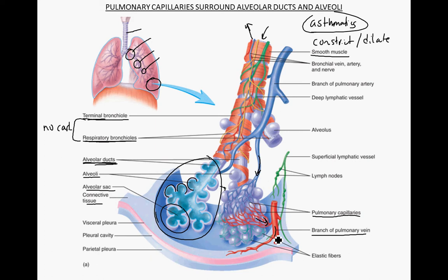Other structures associated with this include the bronchial vein, artery, and nerve externally. These bronchial veins and arteries are systemic — not pulmonary — and they deliver oxygenated blood to the cells of the alveoli and the terminal bronchioles.